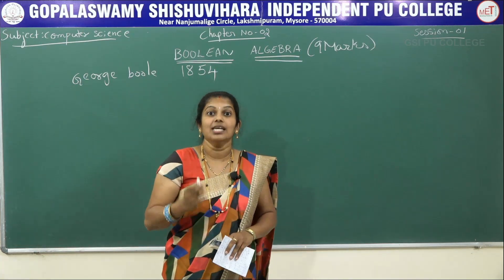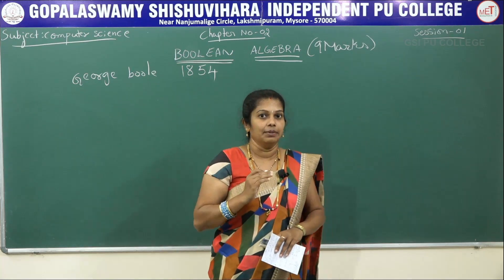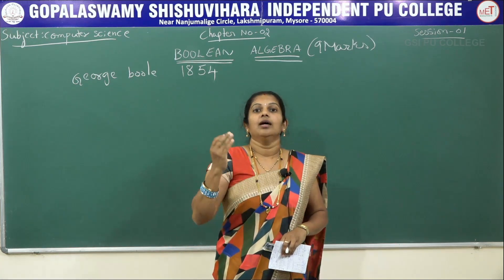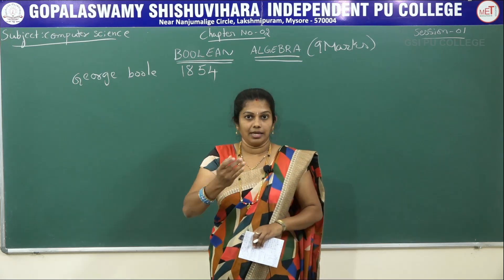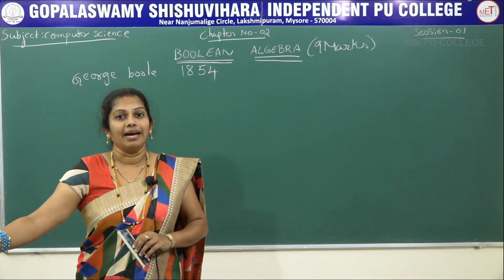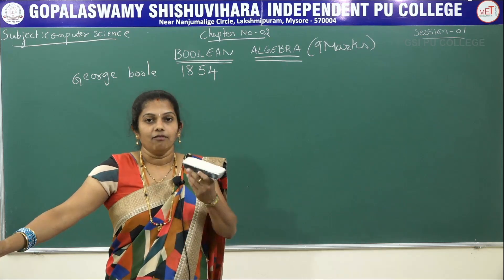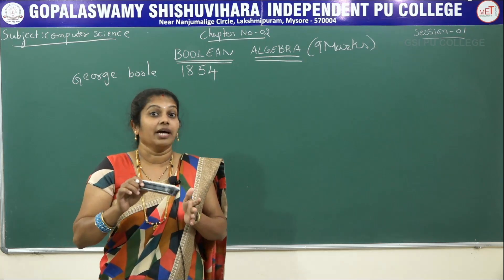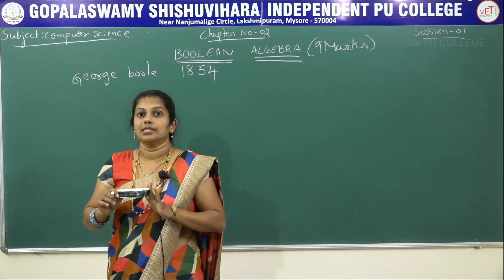Boolean algebra is also called the switching technique. In this, we mainly use binary numbers. When we consider number systems, there are several types — binary, octal, hexadecimal — but Boolean algebra mainly deals with binary numbers only, that is zeros and ones. Here we are able to perform min term, max term, K-map (Karnaugh map), truth tables, and symbols.